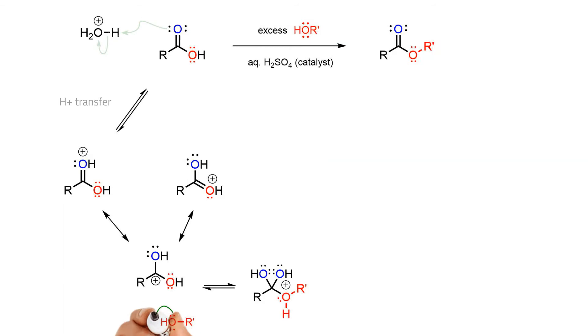The electrophile is then trapped by the alcohol, which is often present in excess as the solvent for the reaction. This generates the first tetrahedral intermediate.